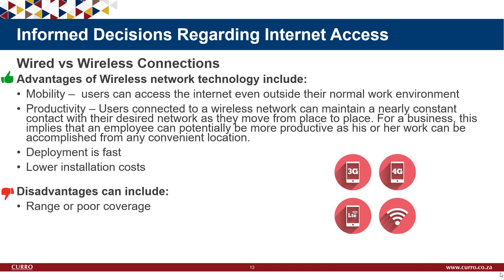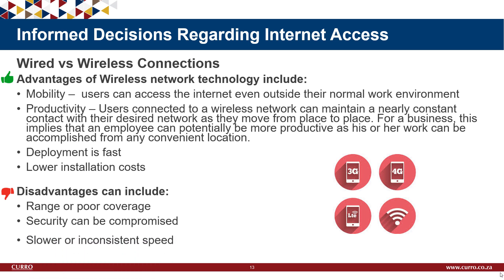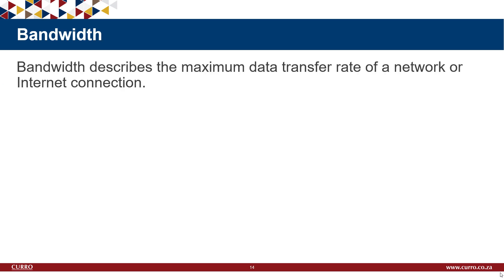Disadvantages of wireless: range or poor coverage — in some areas wireless coverage is poor, causing slow speeds or no access at all. Security can be compromised — Wi-Fi spoofing can be used to steal your username or password, and someone at a distance can attempt to hack into your network or device. Finally, based on coverage you can have slower or inconsistent speeds — the more people that connect to a wireless network, the slower it becomes, and in a densely populated area your connection could slow down significantly.